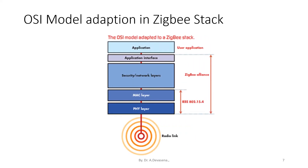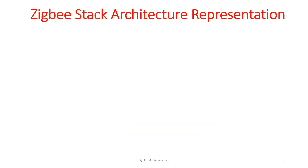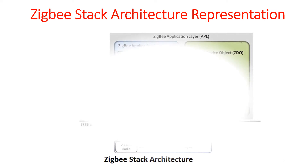In this diagram, the physical layer and MAC layer are comprised by the IEEE 802.15.4 standard, and the security and network layers as well as the application interface layer are defined by the ZigBee Alliance. The application layer is connected to the user application, and the physical layer is directly linked with the radio link. The ZigBee stack architecture representation is shown here.